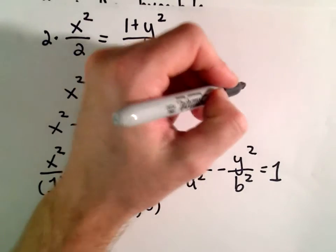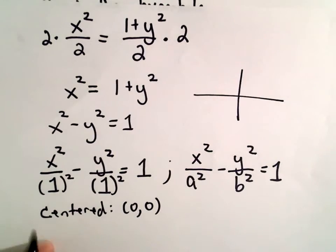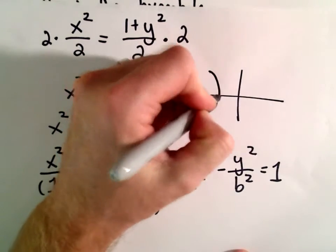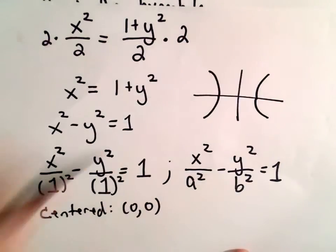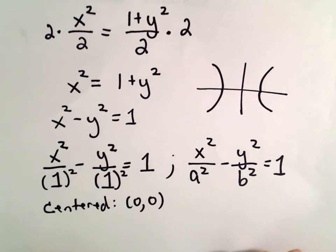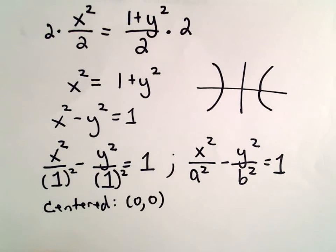Since it's of the form x squared over a number minus y squared over a number, that tells me that the parabola, or excuse me, the hyperbola is going to open to the left and to the right. Okay, so we know that much of it as well.